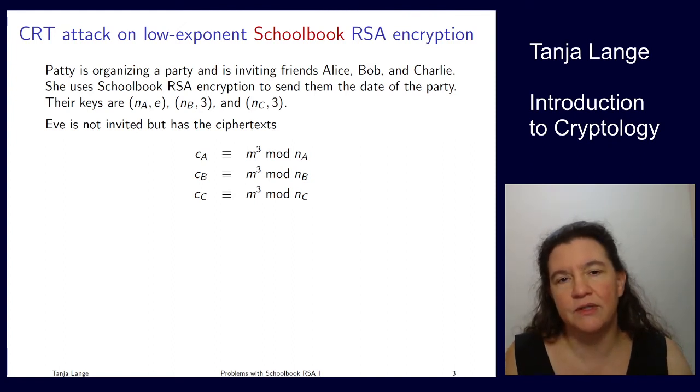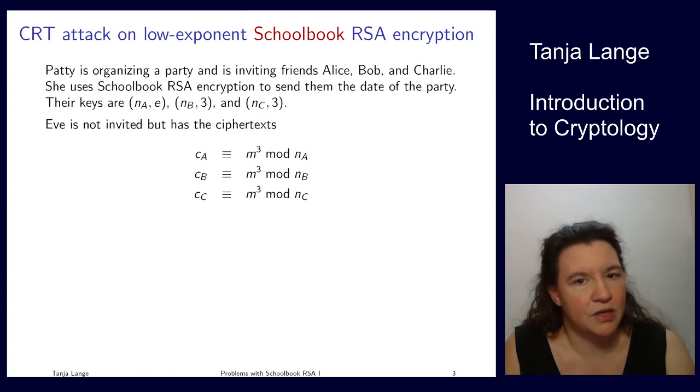So if Eve is getting all these three ciphertexts, she of course knows the public keys. Those are, well, public. And she knows that the exponents are 3. She knows the n_A, n_B, n_C. And she now additionally obtains the ciphertexts.